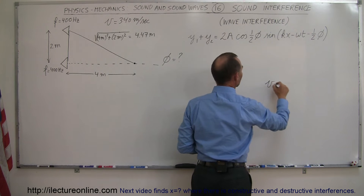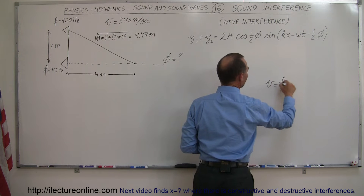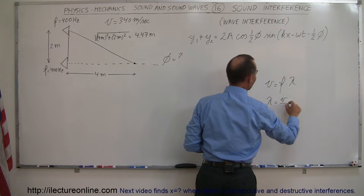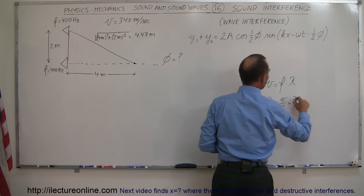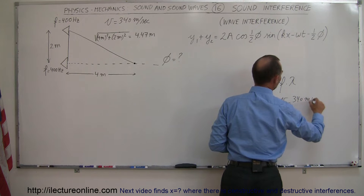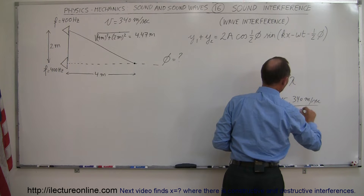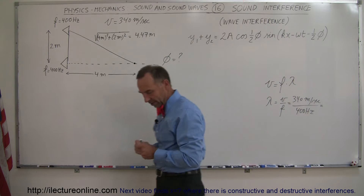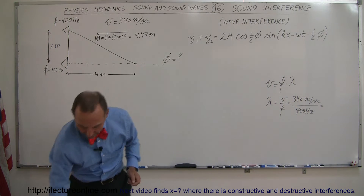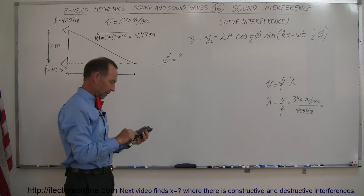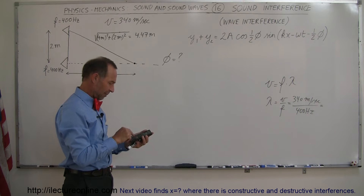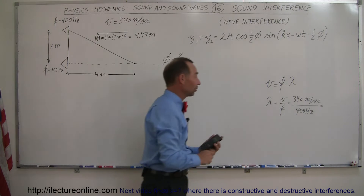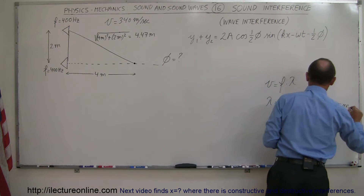We have velocity equals frequency times wavelength, so the wavelength equals the velocity divided by the frequency — 340 meters per second divided by 400 Hz. Using the calculator, 340 divided by 400 gives us 85 centimeters, or 0.85 meters.